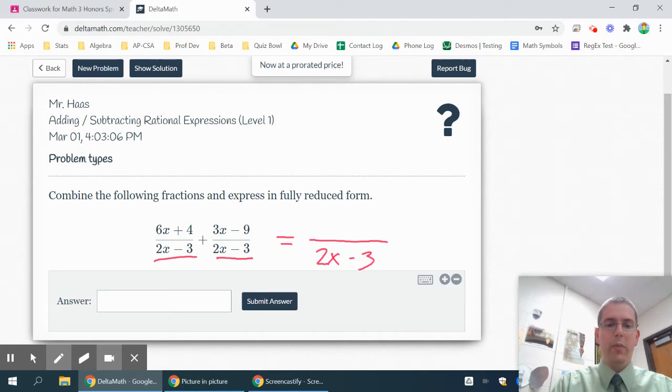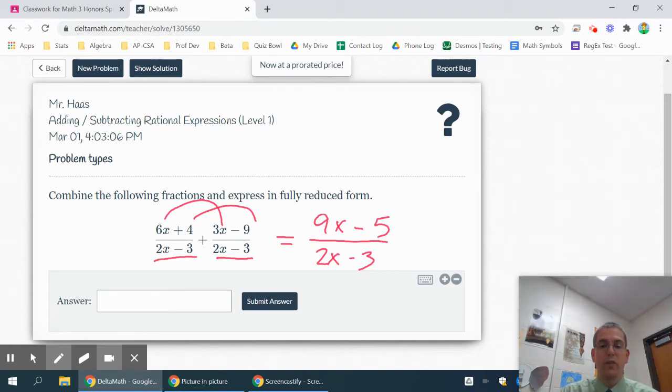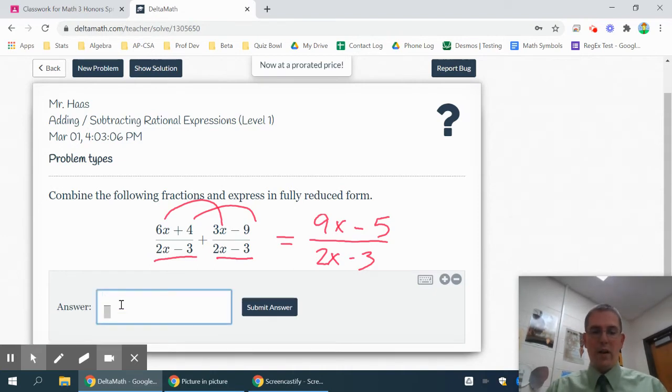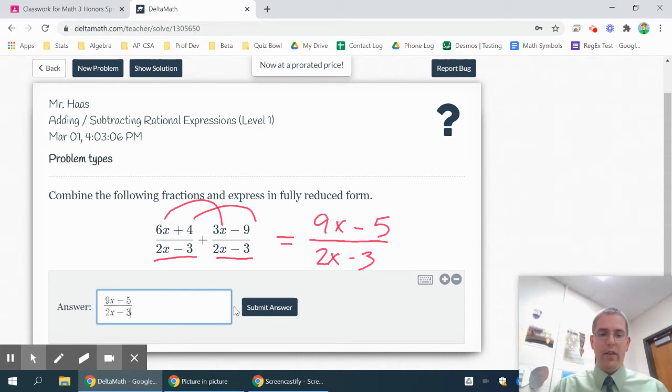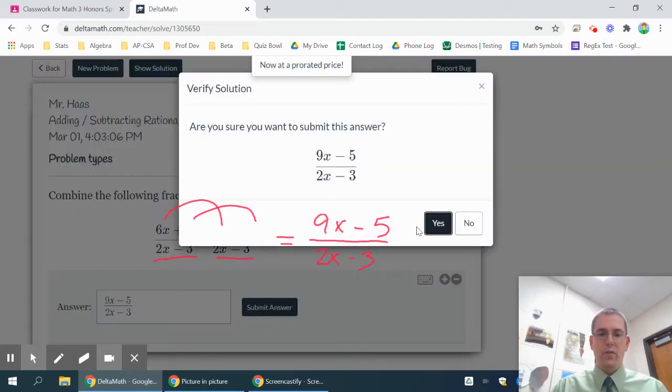The numerator, just put them together by combining like terms. So those go together, make a 9x, and then these go together and make a minus five. If there was anything that I could factor, I would need to factor it out and see if I could cancel out. In this case, nothing does that. So I'll just type in my fraction bar and put in my answer exactly as is: 9x minus five and 2x minus three. And that should be our correct answer for this one.